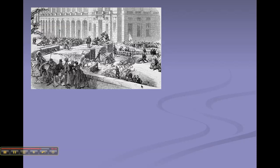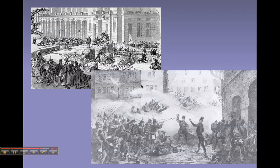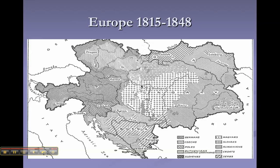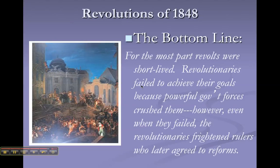They would bring out old furniture, wagon wheels, whatever they had, and block off certain parts of the city. It was a tactic that was fairly successful for a while. One of the reasons why these revolutions weren't successful is there were internal divisions between the many different nationalities that make up Europe in the mid-1800s, and they all felt like they had their own needs and ideologies. The bottom line: the revolts were short-lived. The conservatives regained power and the revolutionaries did not achieve their goals, but they did frighten rulers who later agreed to reforms.